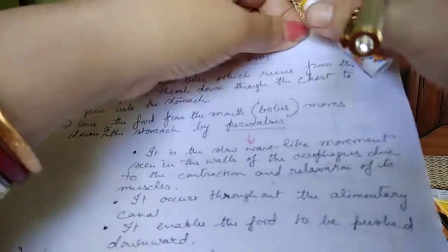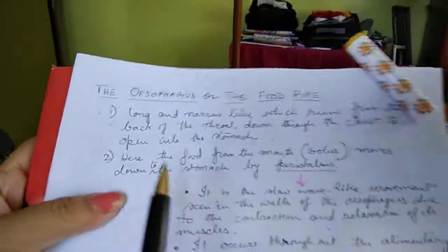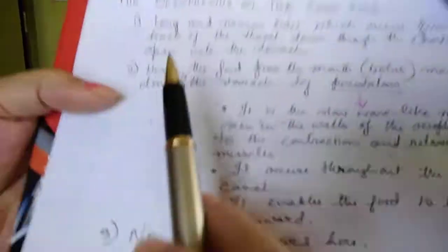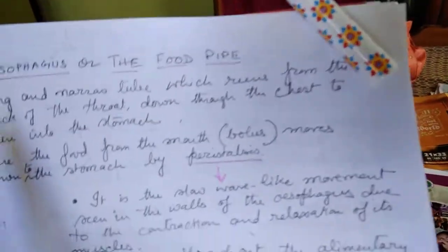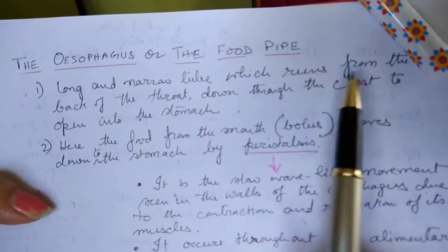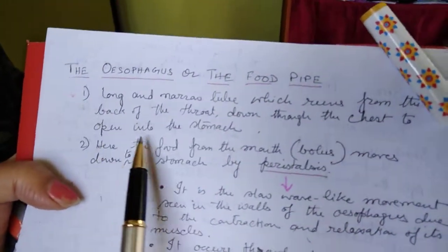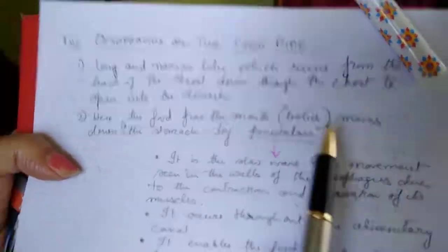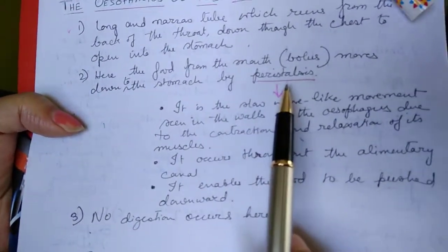The bolus formed in the mouth comes down to the esophagus, which is the second part of the alimentary canal, also called the food pipe. It's a long narrow tube that runs down from the back of the throat through the chest to open into the stomach. The bolus moves down to the stomach by a movement called peristalsis.